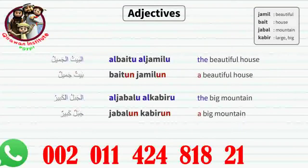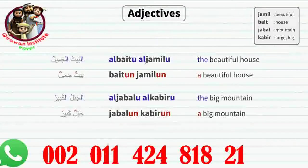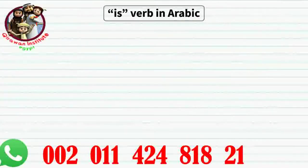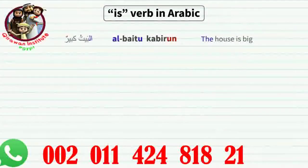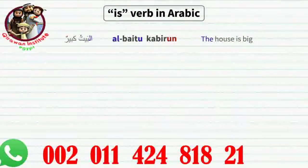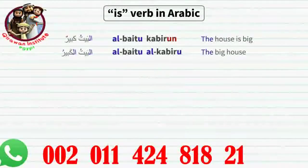These examples are only showing the noun and adjective agreeing on definiteness. But remember, the noun and adjective must agree on number, gender, case, and definiteness. 'Is' in Arabic: in the Arabic language, there is no equivalent word for 'is'. For example, al-baytu kabirun means 'the house is big.' Al-baytu means 'the house,' kabirun means 'big.' Notice how the adjective is in its default state and not following the noun. So al-baytul kabiru means 'the big house,' while al-baytu kabirun means 'the house is big.'